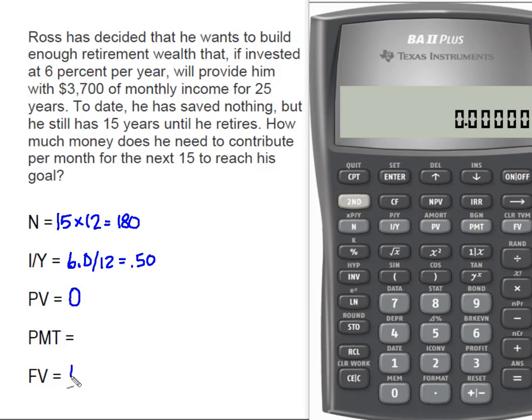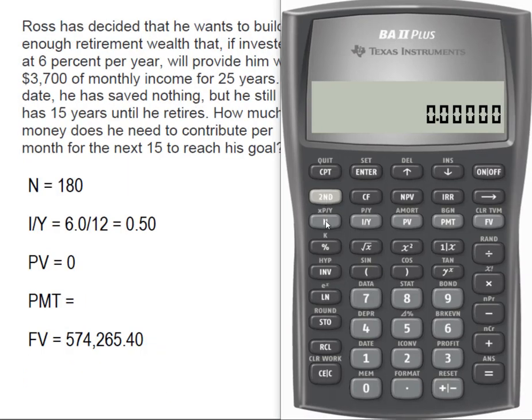But we knew from our previous step that in the future, he needs to have $574,265.40. So the question becomes, how much do these 180 payments need to be at 6% interest in order to have that amount in the future?